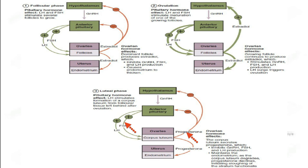In the luteal phase, positive feedback of FSH and LH continues, causing the corpus luteum to produce progesterone in case pregnancy occurs. If there are no signs of pregnancy, the system switches back to a negative feedback loop, with progesterone sending negative signals to stop producing more FSH and LH. In this way, these hormones are controlled by negative and positive feedback loops.